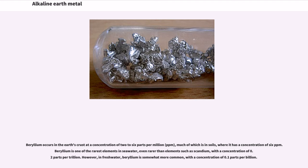Beryllium occurs in the Earth's crust at a concentration of 2–6 parts per million (ppm), much of which is in soils, where it has a concentration of 6 ppm. Beryllium is one of the rarest elements in seawater, even rarer than elements such as scandium, with a concentration of 0.2 parts per trillion. However, in freshwater, beryllium is somewhat more common, with a concentration of 0.1 parts per billion.